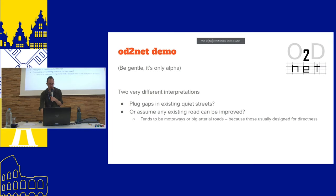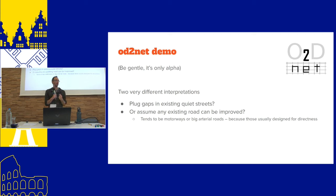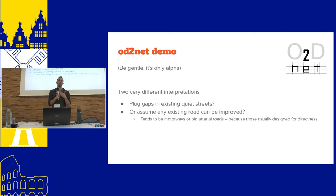The two different versions of the network have very different policy implications. If you want to encourage people to cycle today and just plug a few gaps, the quiet network helps. But if you're ambitious as a politician, you could say: if we want everybody to take the most direct route, look for the arterial roads and motorways and make it nice to cycle on them.